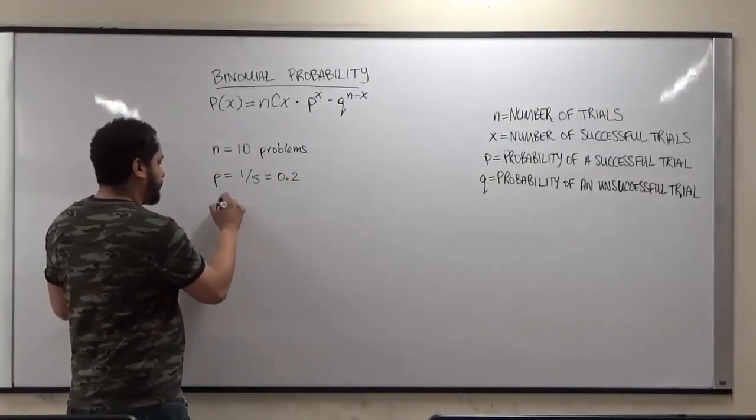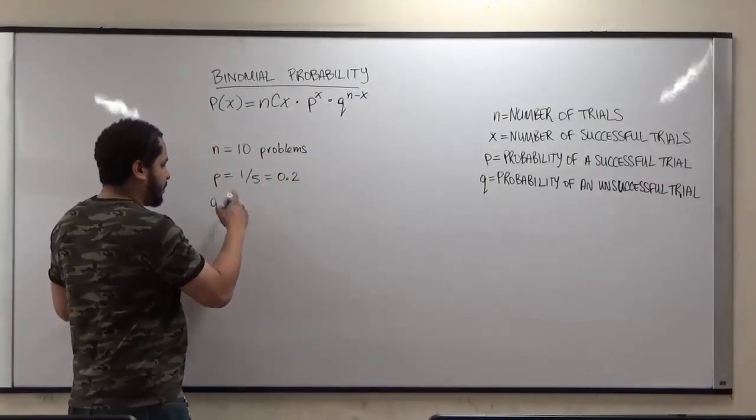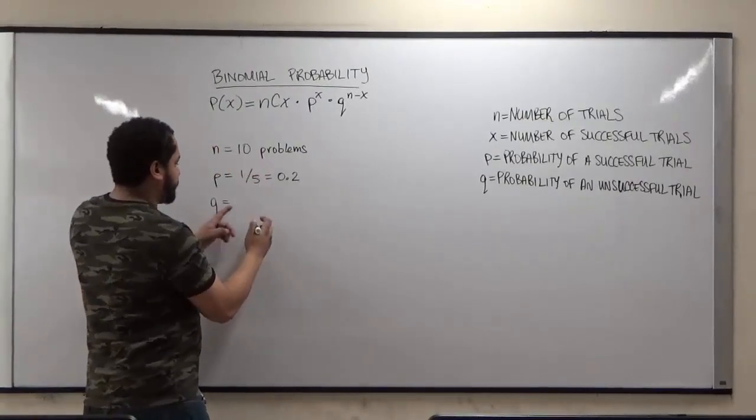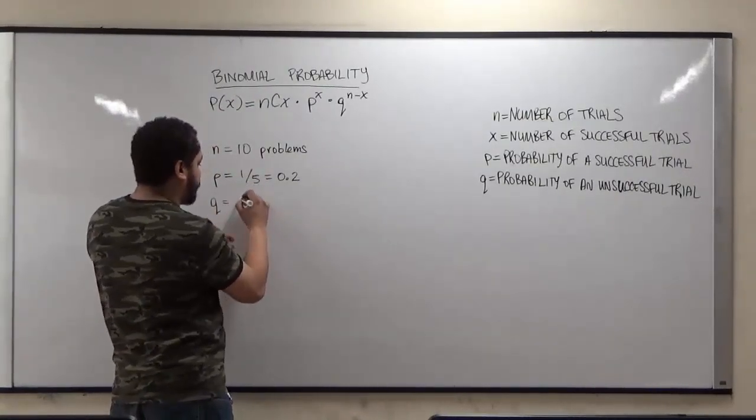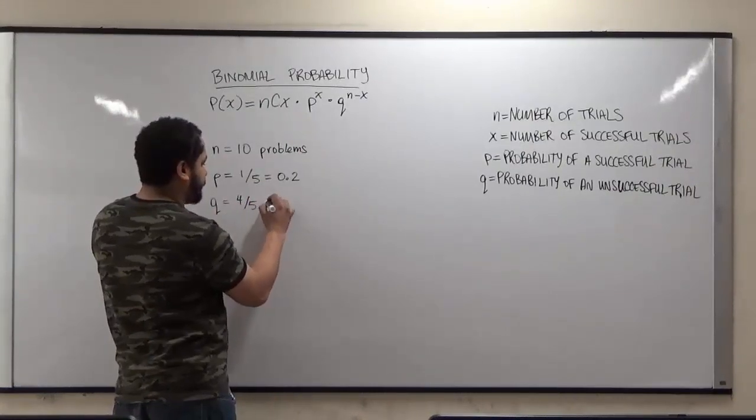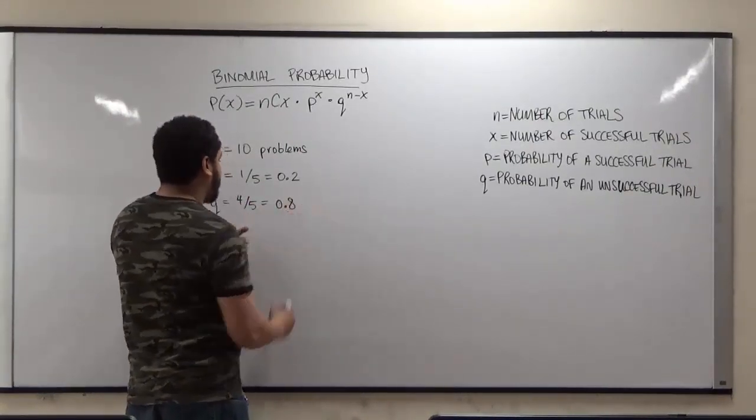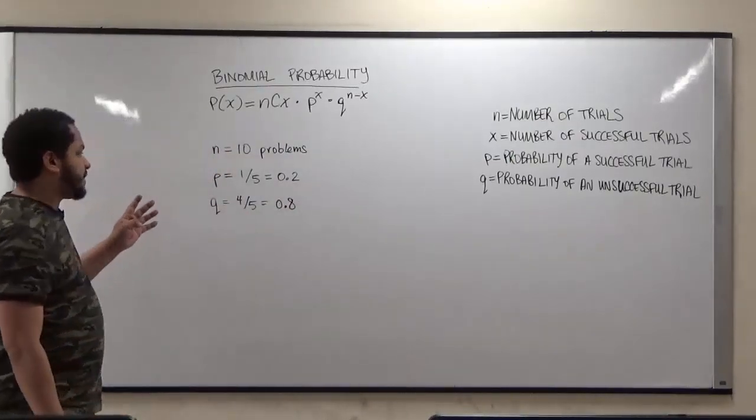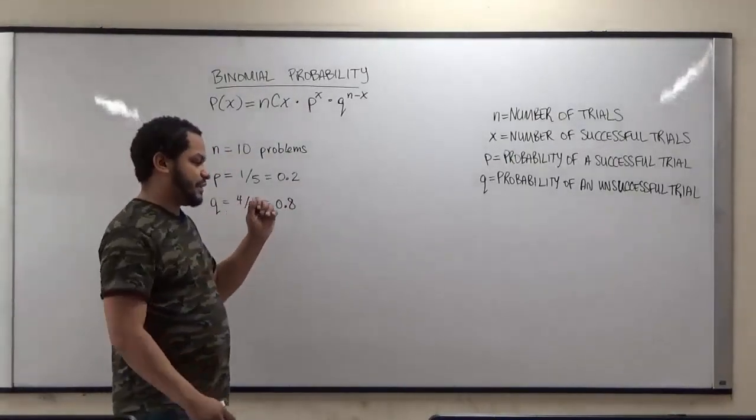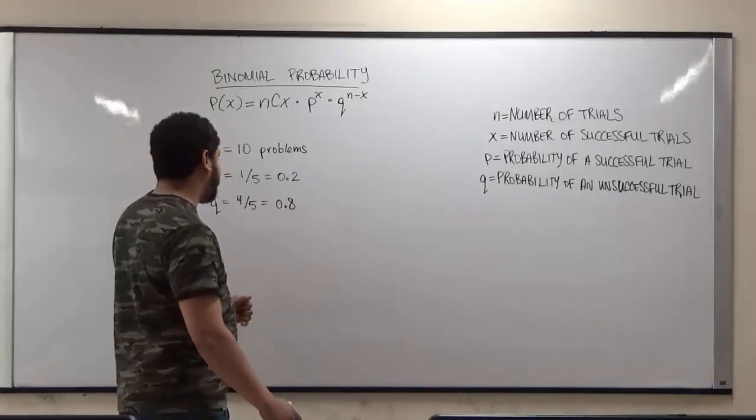Now to get our q, our probability of a failure, or a fail on a trial, we know that if one answer is right out of 5, then that means that 4 are wrong out of 5. And this, when we divide 4 divided by 5, we get 0.8. And here, since we know that 70% would be passing with the minimum of a good mark, we would say